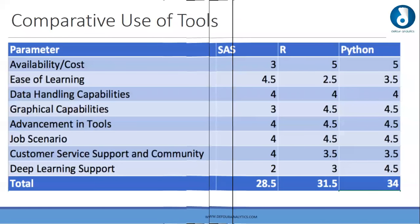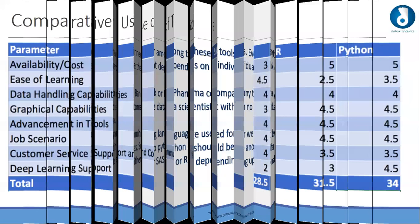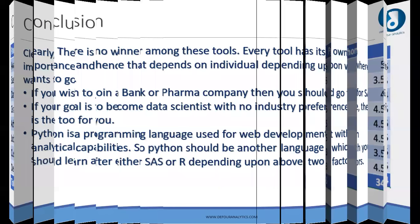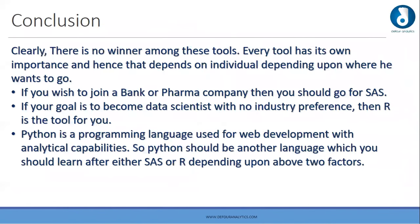In conclusion, we cannot say which is the winner among these tools because each tool has its own importance depending on the individual and how they choose to use it. If you want to work in banking or pharma, go for SAS. If your goal is to become a data scientist with no specific industry preference, then R is the tool for you. Python is used for web development and IT capabilities, and should be learned after SAS or R. The session will now be continued by Akinshah.